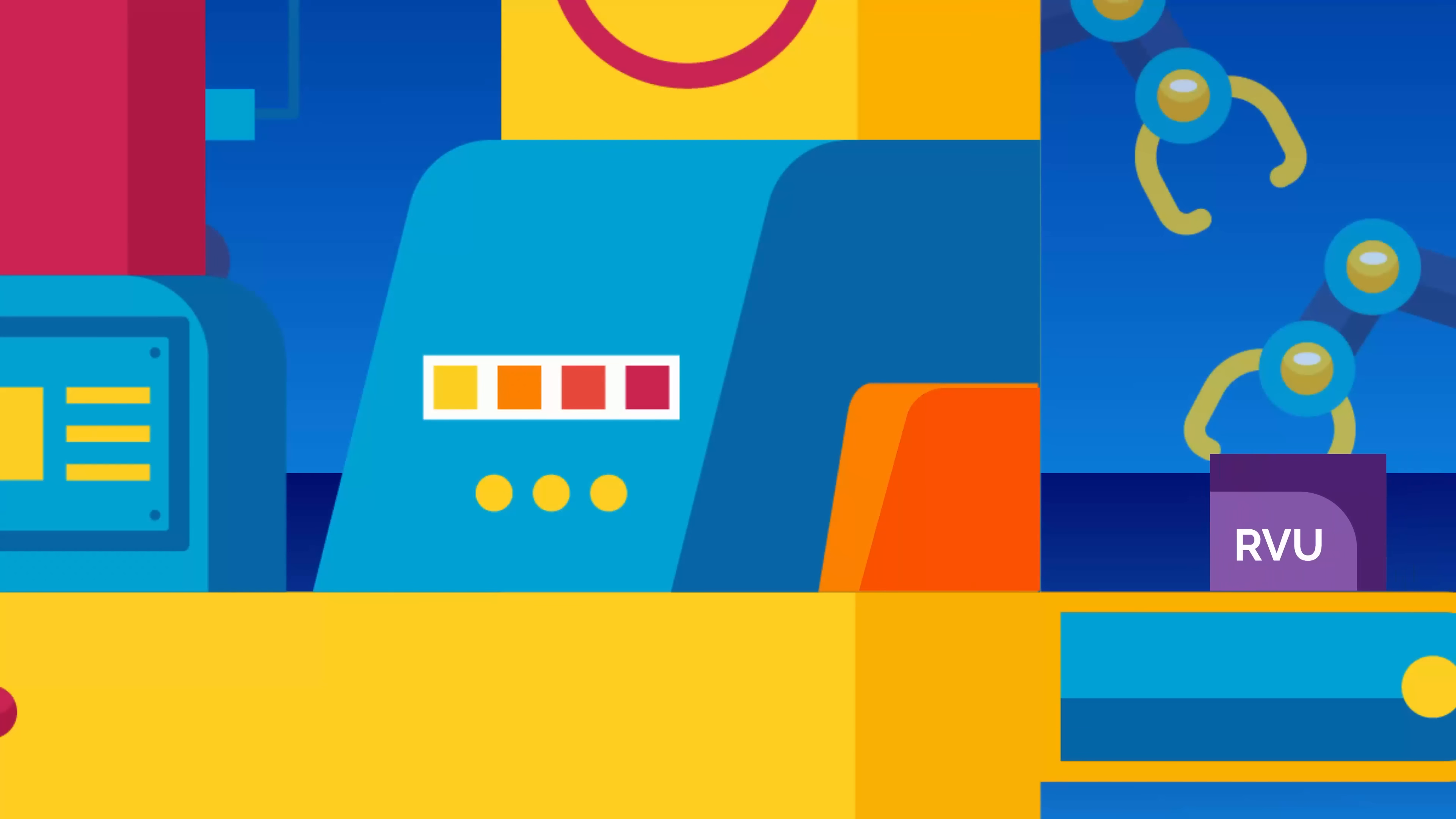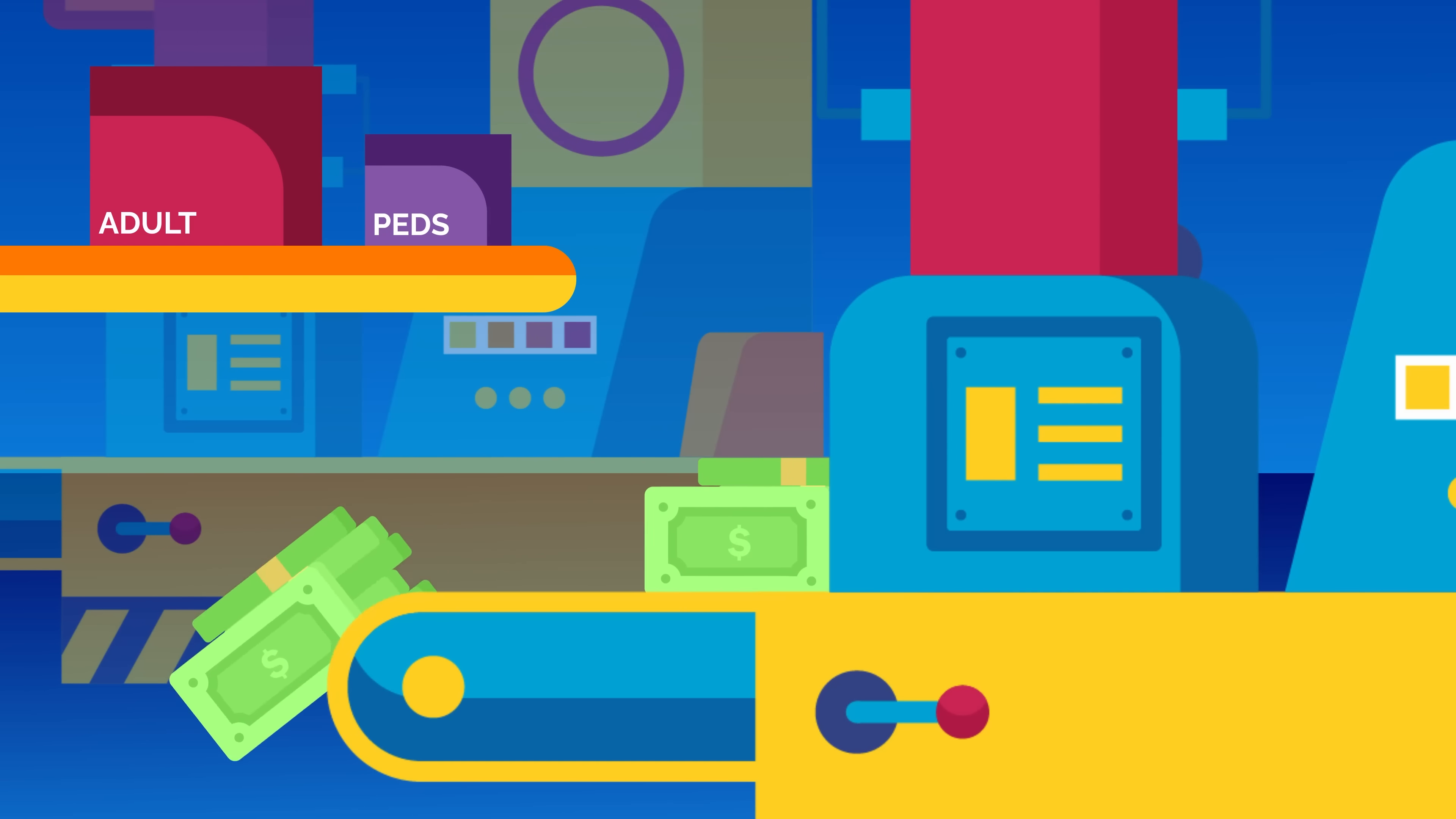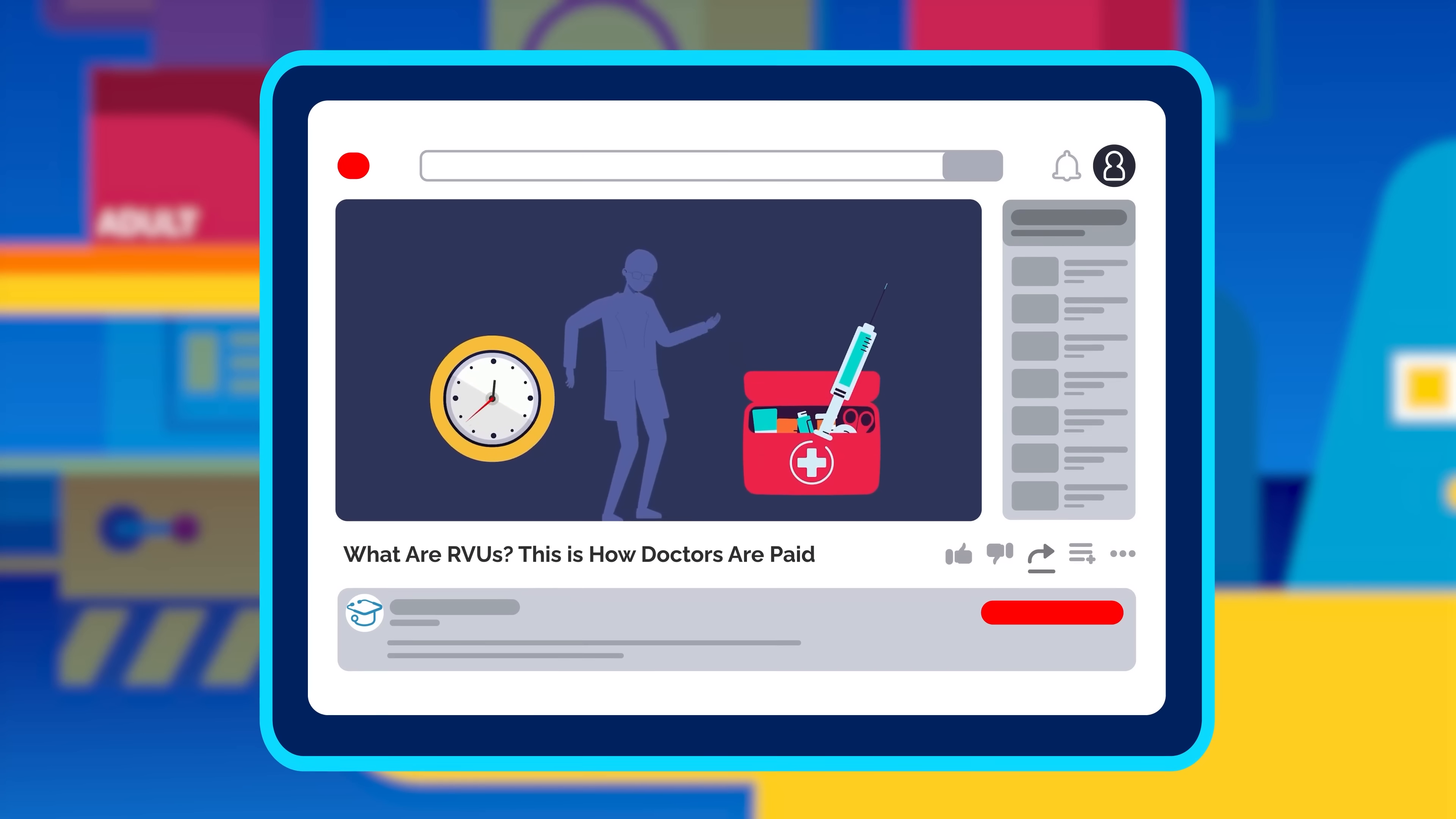That said, the pay may be slightly less than general anesthesia, as most pediatric procedures are reimbursed at a lower rate since they are assigned fewer relative value units, or RVUs. Curious about how physicians are paid? Watch our video on the RVU payment system linked in the description.